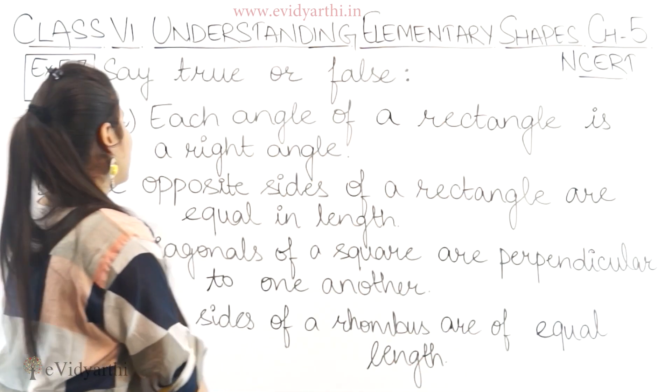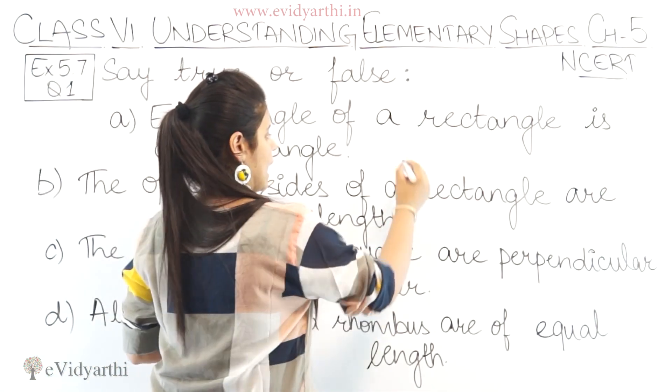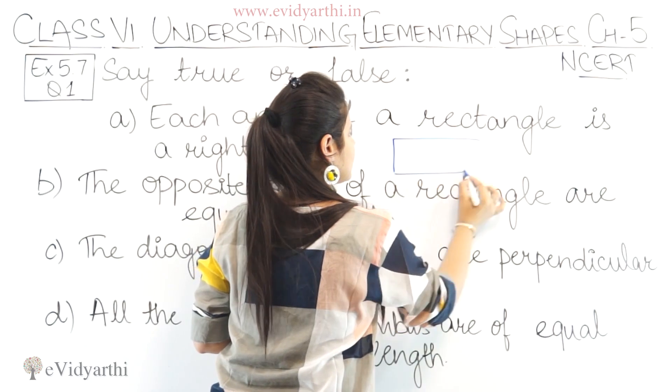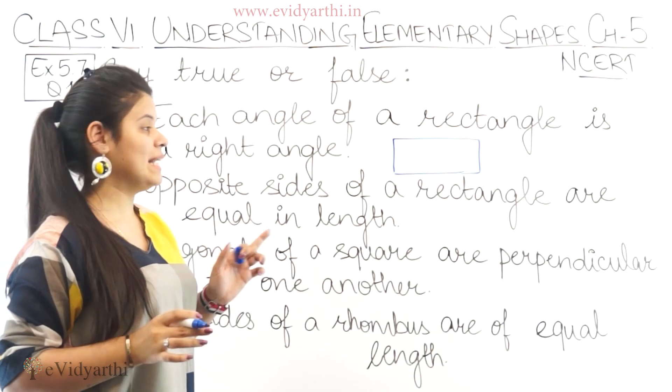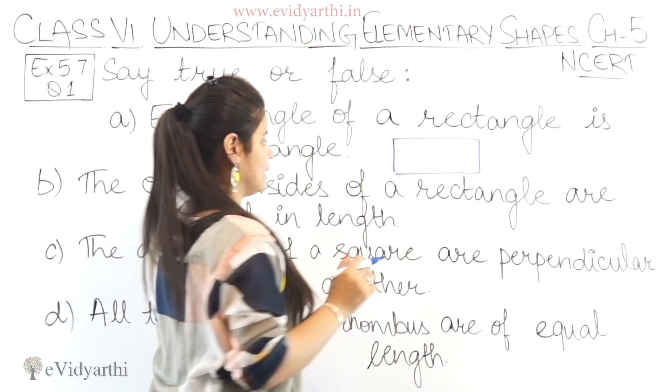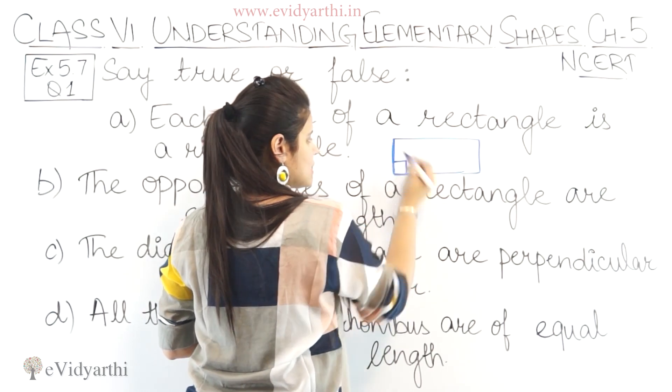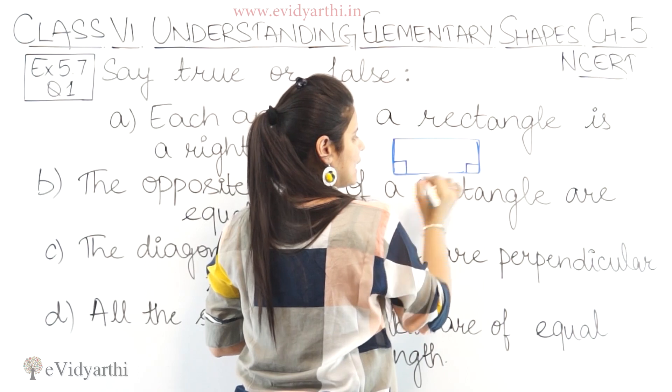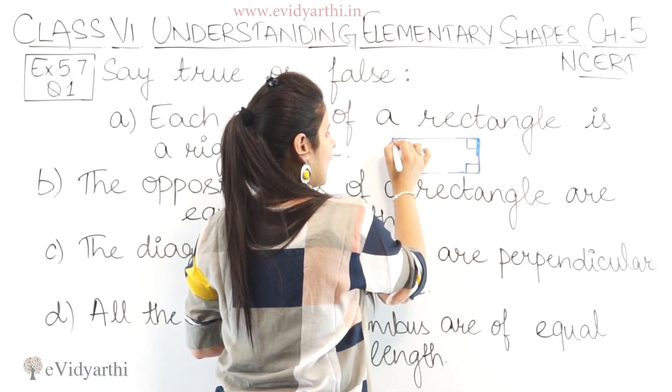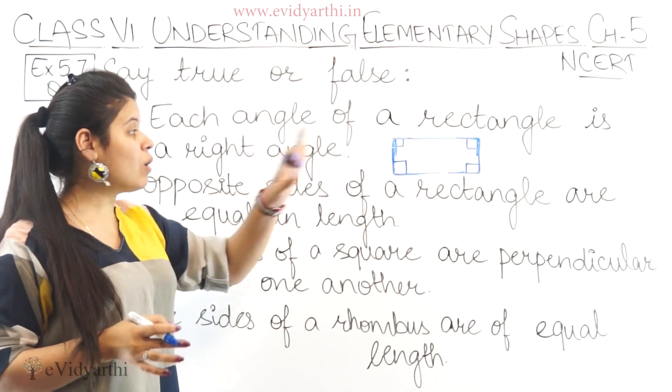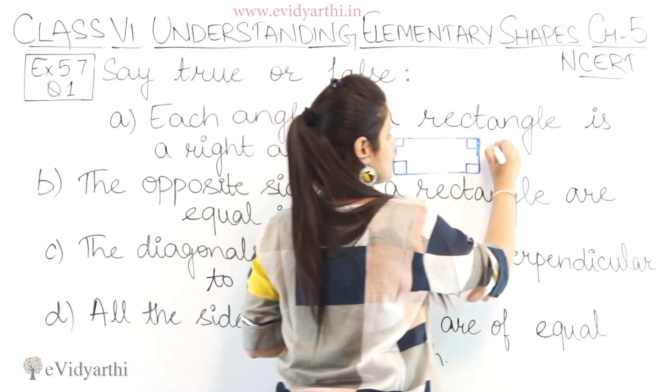The first statement we have is each angle of a rectangle is a right angle. Now we have this kind of rectangle. So they are asking that all the angles are right angle, means all the angles are 90 degree. So if we talk about the angles, this is 90 degree. Similarly, this is 90 degree. Here we go, this is 90 degree, and this is also 90 degree. So all the angles are right angle. So the first one is true.